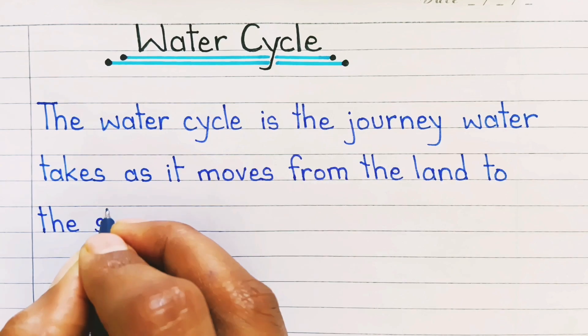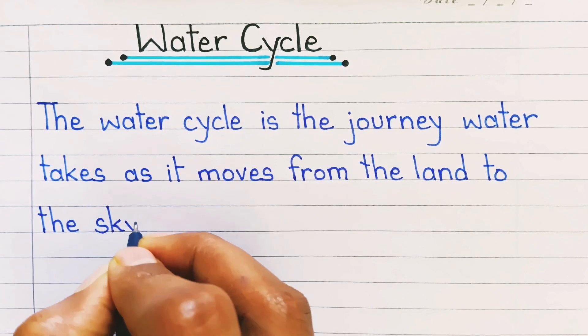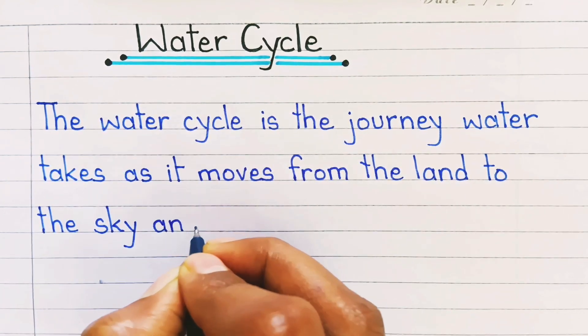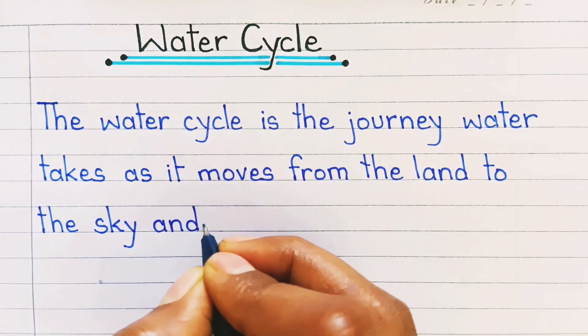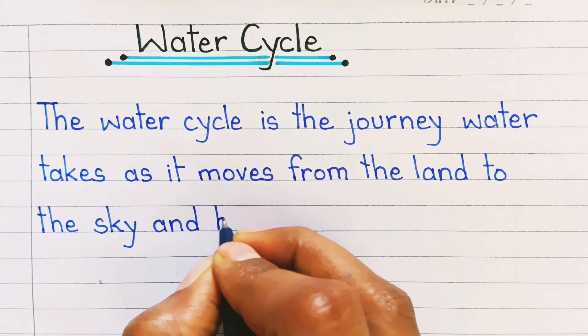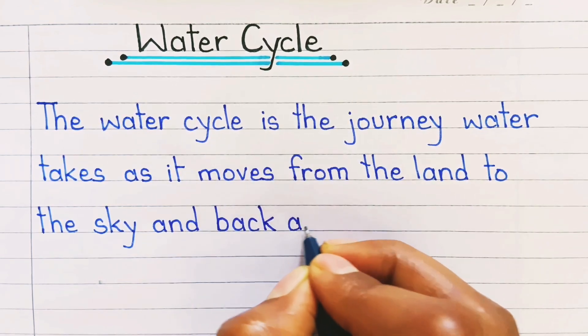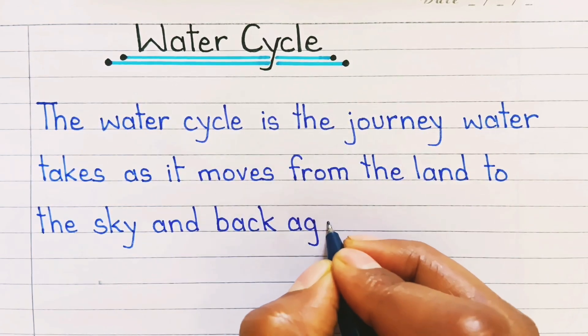The water cycle is the journey water takes as it moves from the land to the sky and back again.